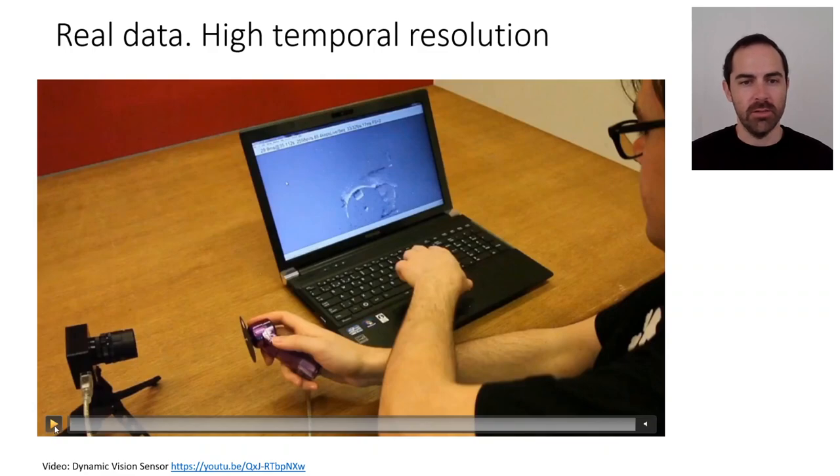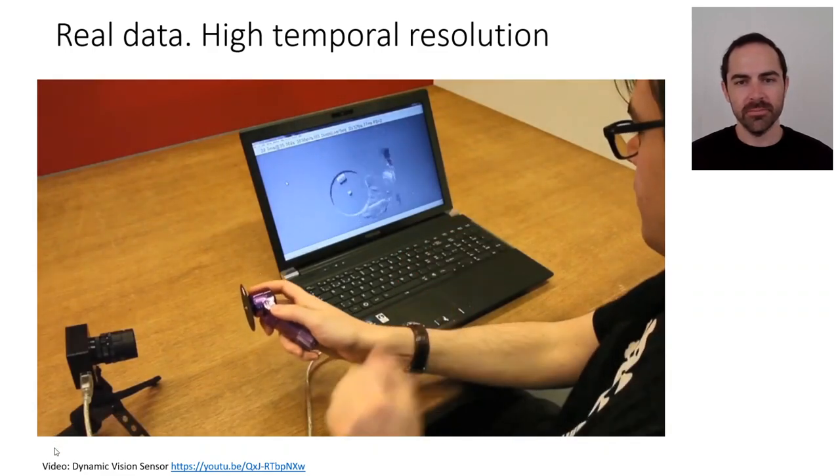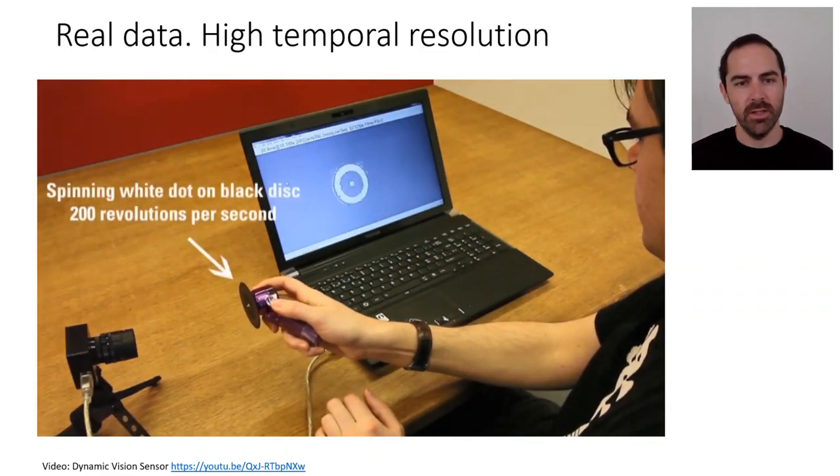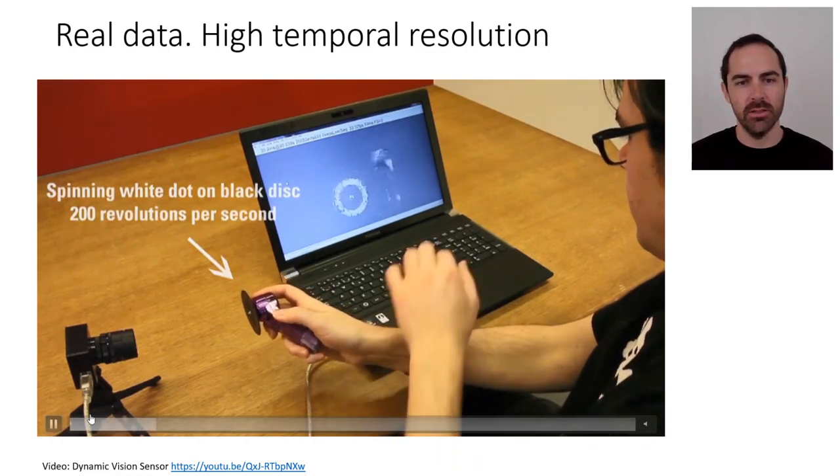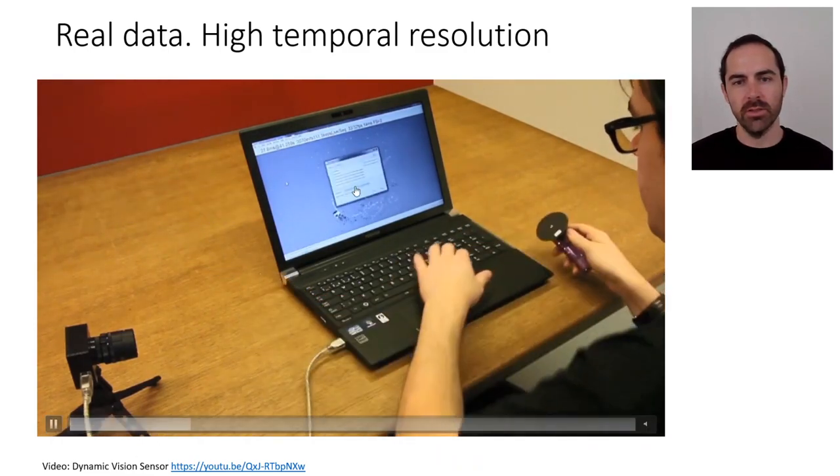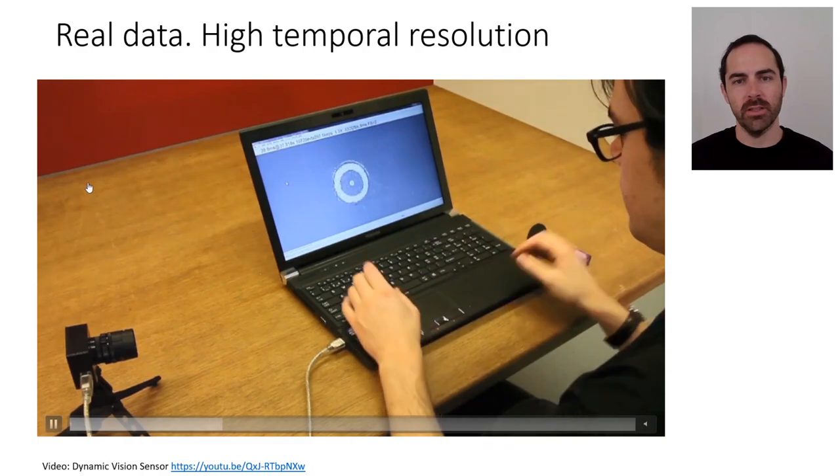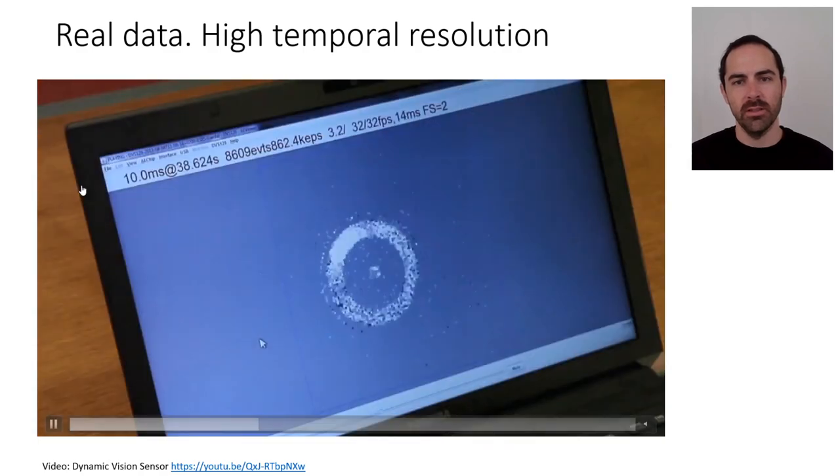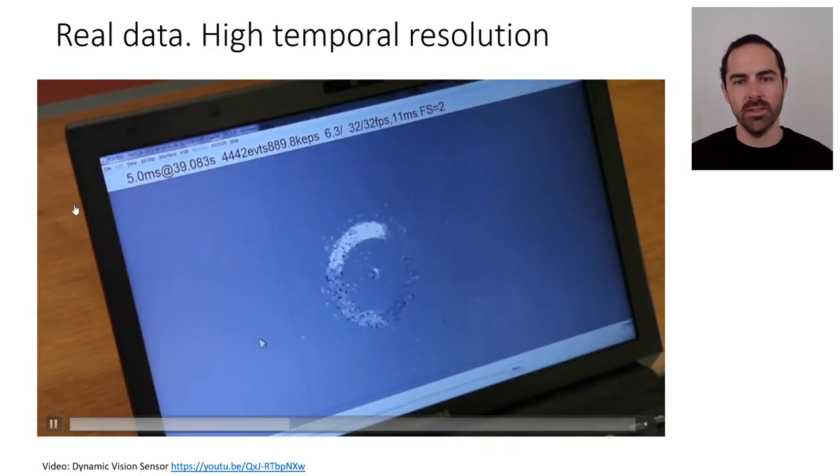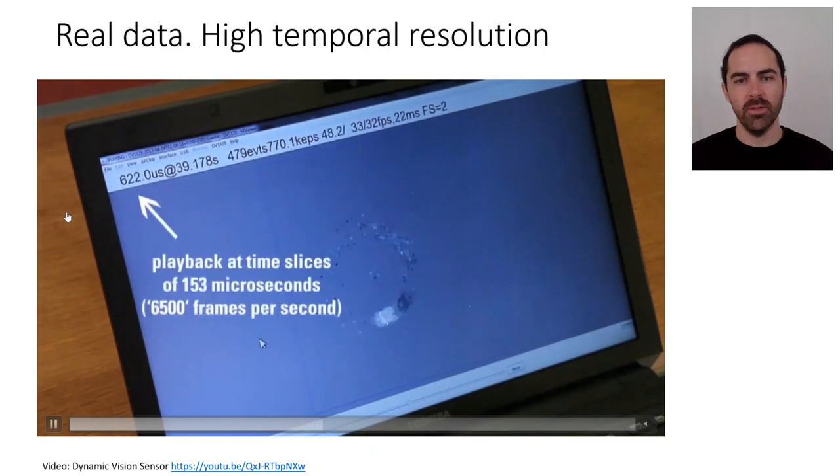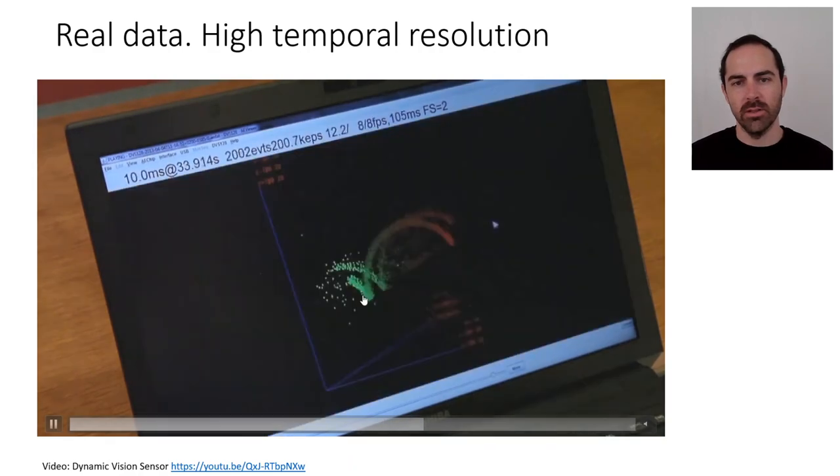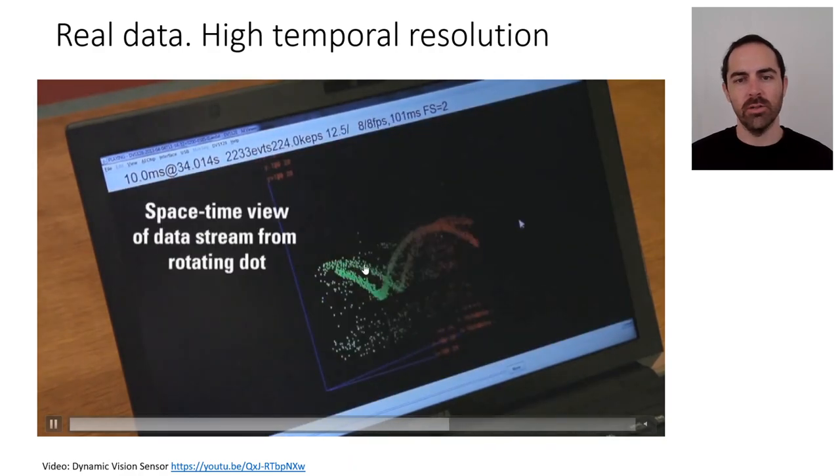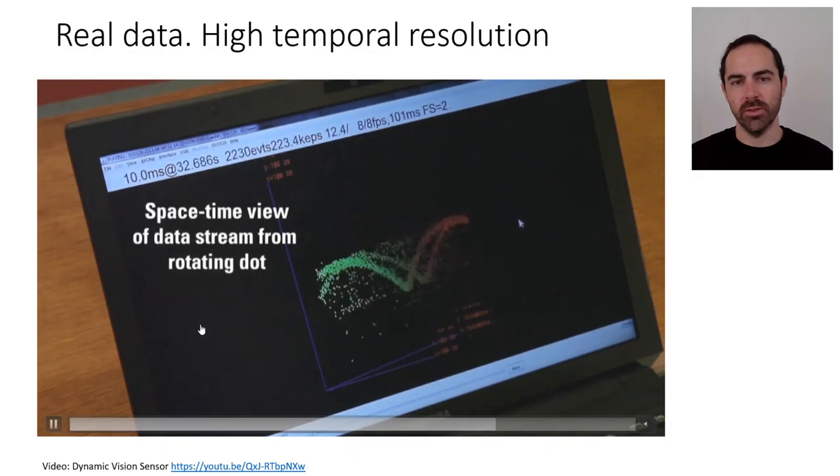Now let's take a look at not an animation but at real data. Here we have on the left a DVS 128 and it's acquiring the scene. We recorded it and now we are playing back again. And we are visualizing these events which are in spacetime, but now we are visualizing them in slices of down to 153 microseconds. This is the actual output of the sensor. It's a spacetime view of the data.